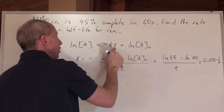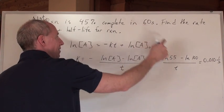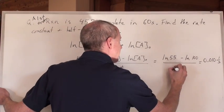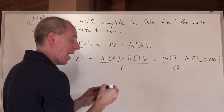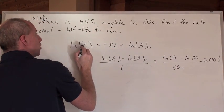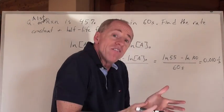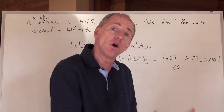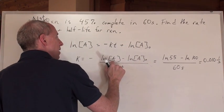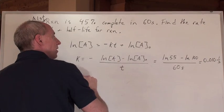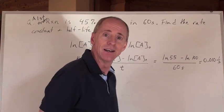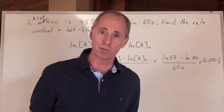The natural log of the concentration at a given amount of time, at 60 seconds, what is the concentration? If it's 45% complete, you have 55 left over. So I put in 55 here for my concentration at 60 seconds, and the initial is 100 because it's 100%. Make up the concentrations from the percentages.